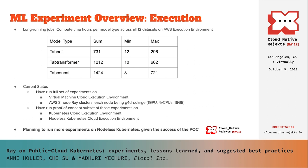Compute environments that can burst to accommodate high load at the lowest available cost and contract when load stops are well-suited to this use case. We ran the full set of experiments on the VM cloud execution environment—specifically AWS using three-node Ray clusters with G4DN.extraLarge instances. We ran proof-of-concept subsets on the Kubernetes and Nodeless Kubernetes environments, and are planning more experiments on Nodeless Kubernetes given our positive experience with the POC.